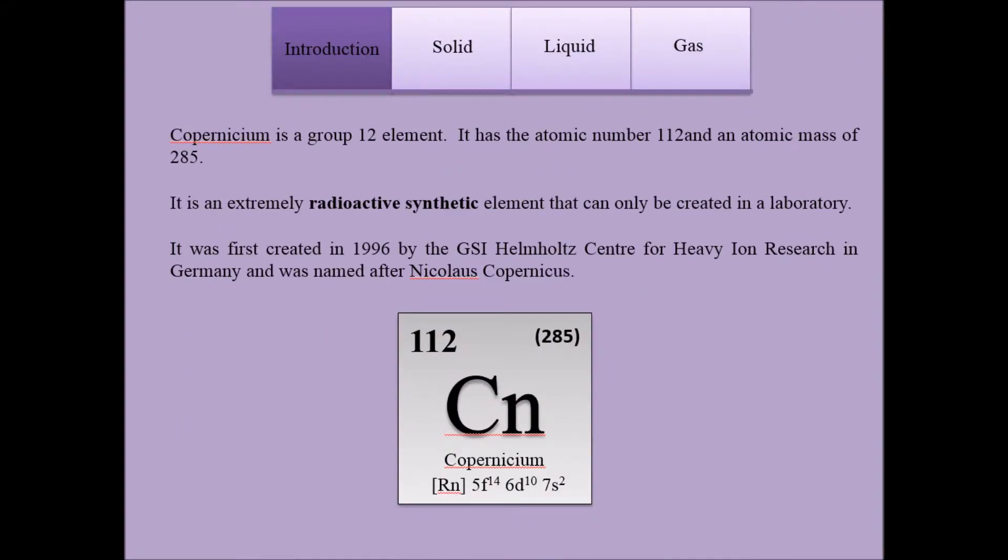Copernicium is a group 12 element. It has the atomic number 112 and an atomic mass of 285. It is an extremely radioactive synthetic element that can only be created in a laboratory.